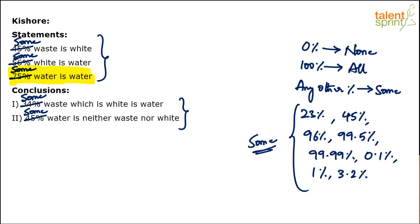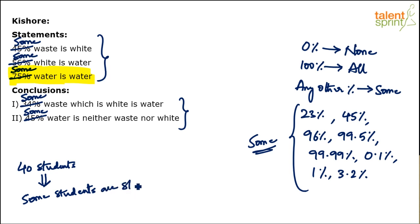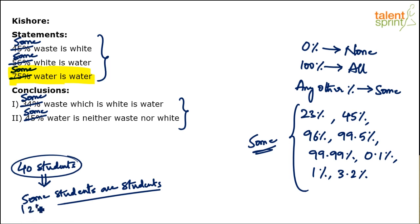For example, there are 40 students. Can I not say some students are students? Yes — like 25 students are students. Does that mean the remaining 15 students are not students? No, we never said that. We said some students are students. Never look at what is not given — only focus on what is given. Logically, some water is water is correct.